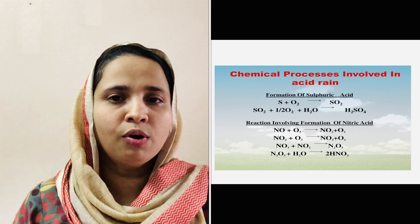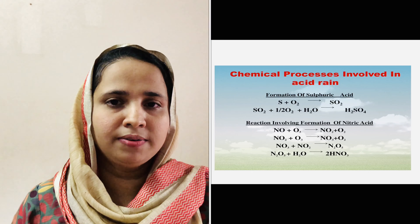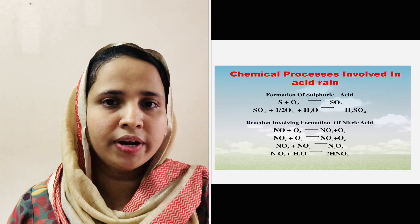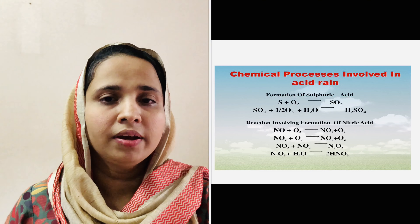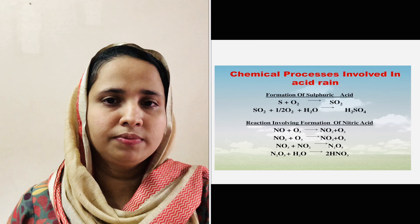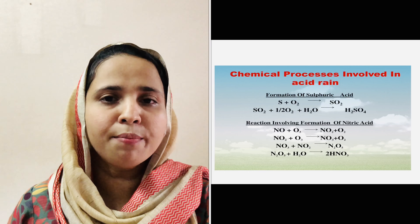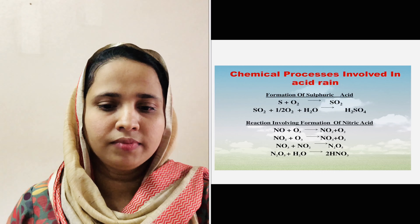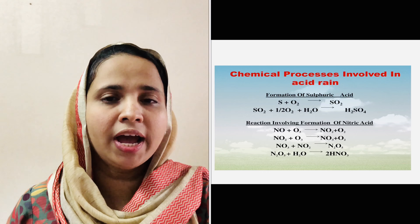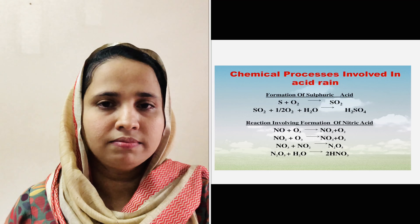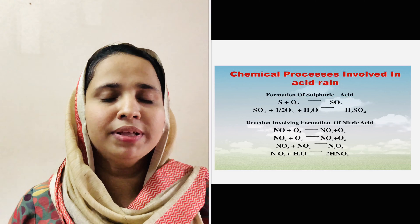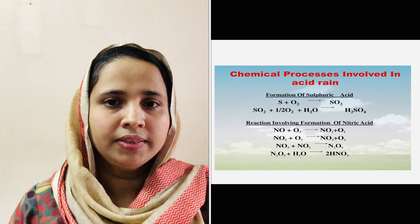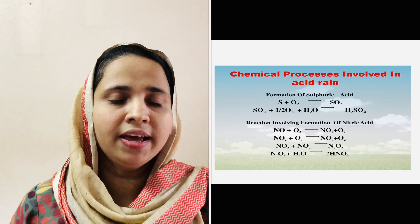The second method for the formation of nitric acid: NO reacts with ozone to form NO₂ and oxygen. The formed NO₂ again reacts with ozone to form NO₃. Then NO₂ and NO₃ combine to form N₂O₅. Finally, N₂O₅ reacts with water to form nitric acid. This is the second method for the formation of nitric acid in the atmosphere.